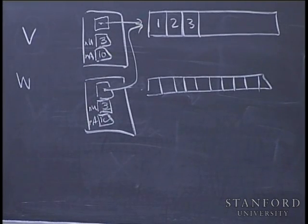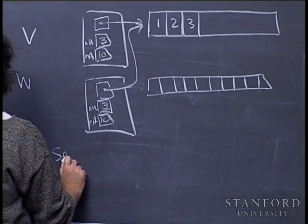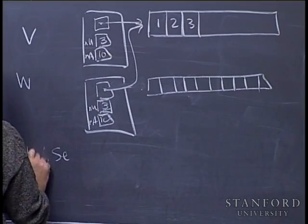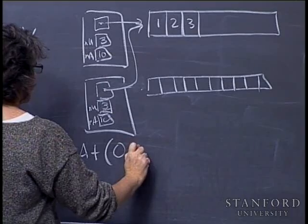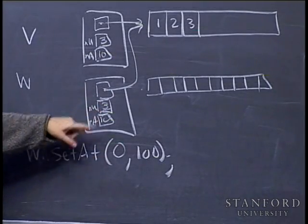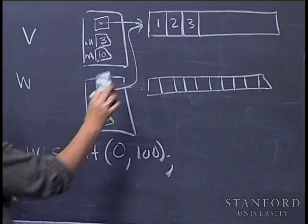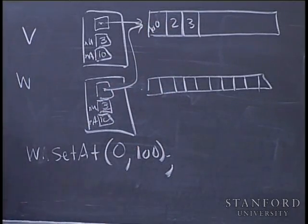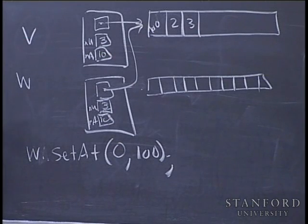Now V and W both point to the same array. They have the same values for numUsed and numAllocated, but they're actually independent objects. If we continue using V and W, we'll see strange effects of them interfering. For example, if I do 'W.setAt(0, 100)', W checks that index 0 is in bounds and writes 100 there. As a result, V.getAt(0) also changed — which is pretty surprising. They share one piece of memory, so changing one changes both. They are not independent.